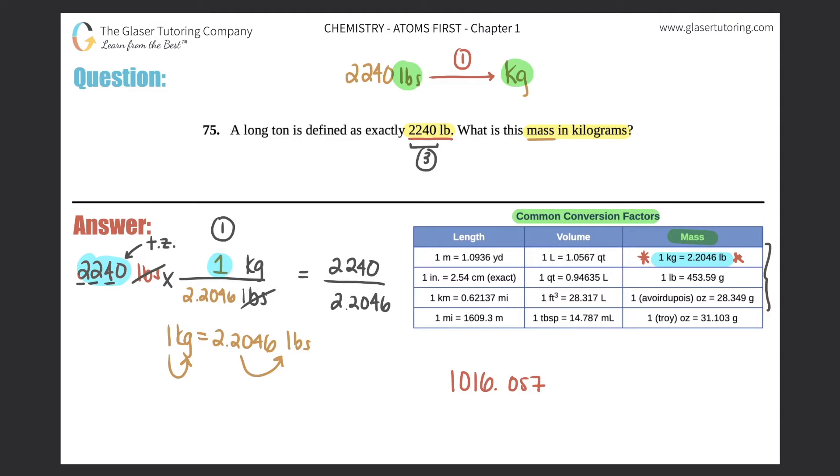Remember, trailing 0s only count if you see a decimal. But there was no decimal here, so it does not count. That's why you have three sig figs here. I need three sig figs in my answer.